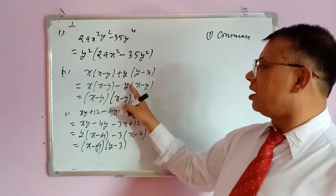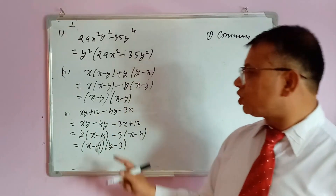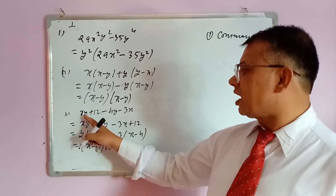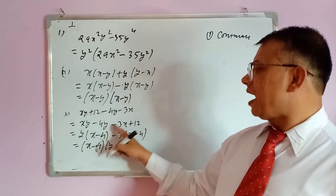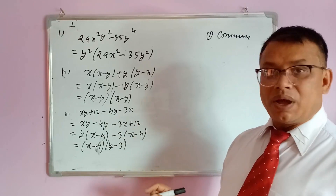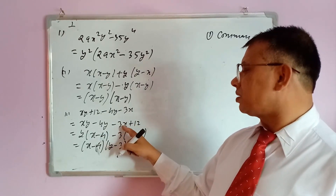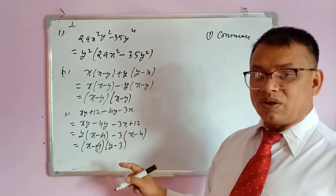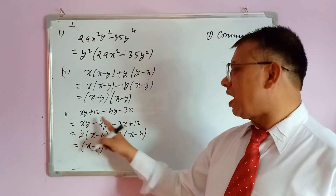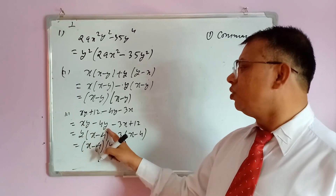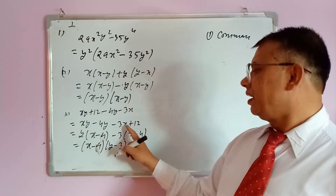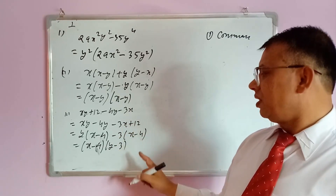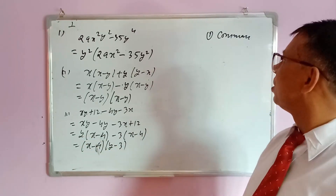For the next question, there is no common factor, so we arrange terms: xy with 4y, and −3x with 12. Taking 2y as common from the first pair gives x remaining and 4 remaining. Taking 3 as common from the second pair gives x minus, and −4 remaining. Now (x−4) is the common factor, giving the final answer (x−4)(2y−3).